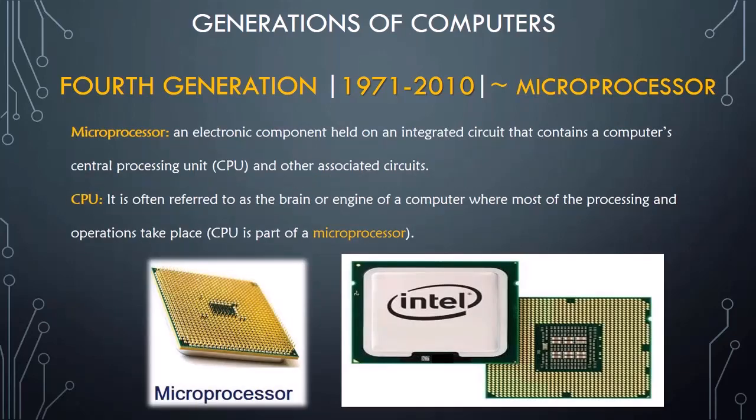A microprocessor is an electronic component held on an integrated circuit that contains a computer's central processing unit and other associated circuits. CPUs are often referred to as the brain or engine of a computer, where most of the processing and operations take place.